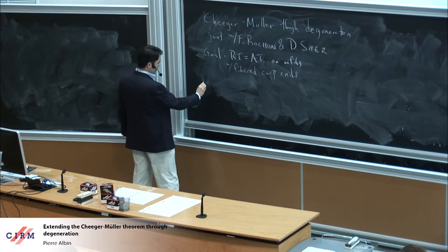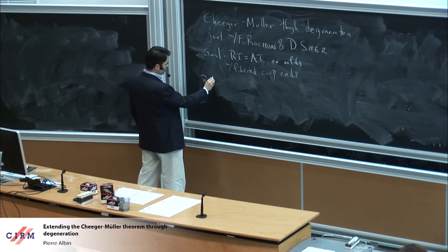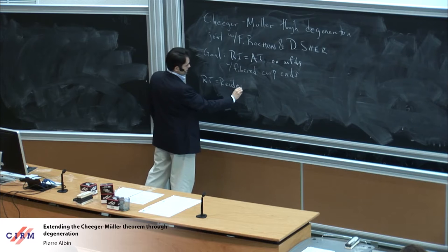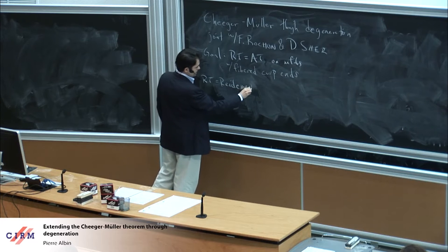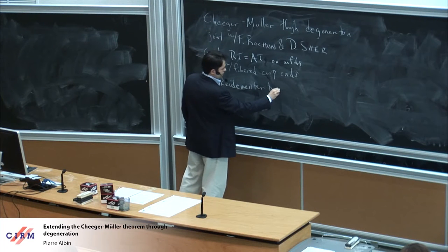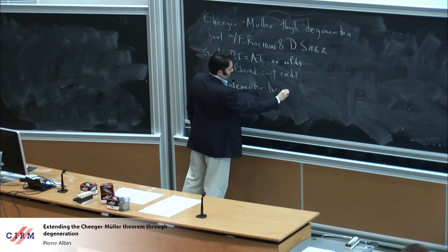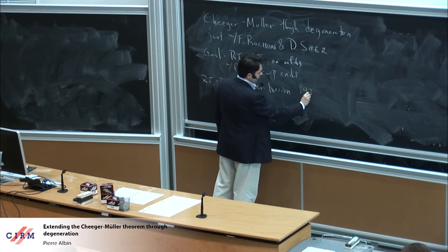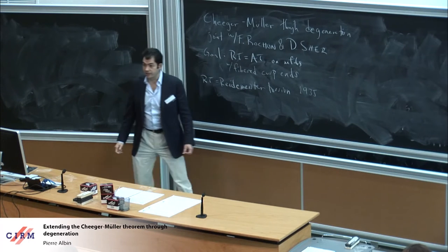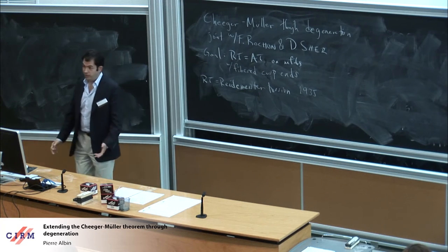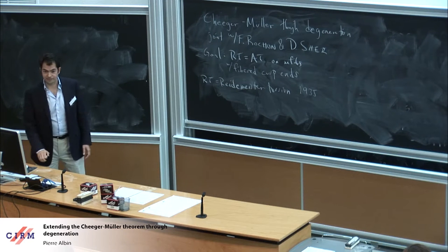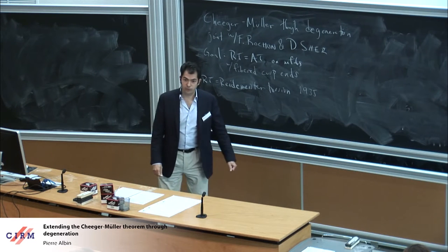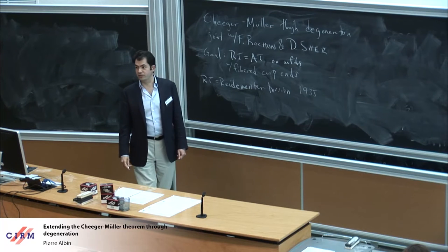Let me start with Reidemeister torsion. This is a topological invariant introduced in 1935 by Reidemeister, and the goal when he introduced it was to distinguish lens spaces.